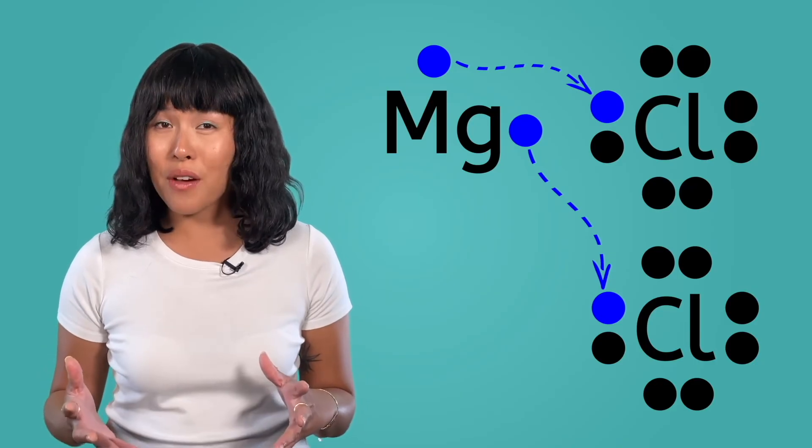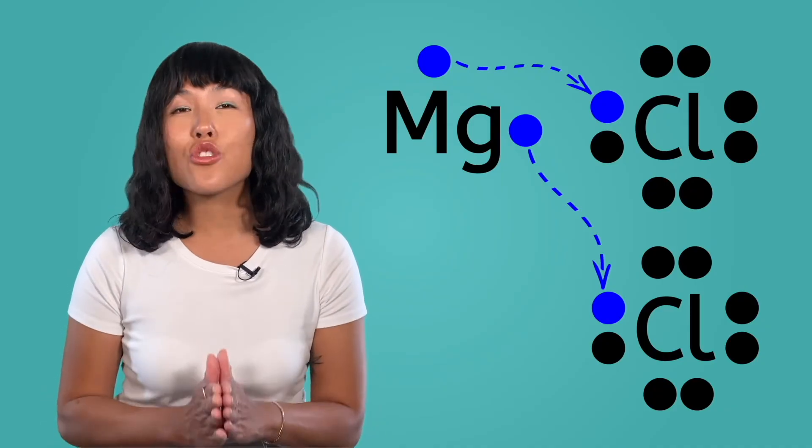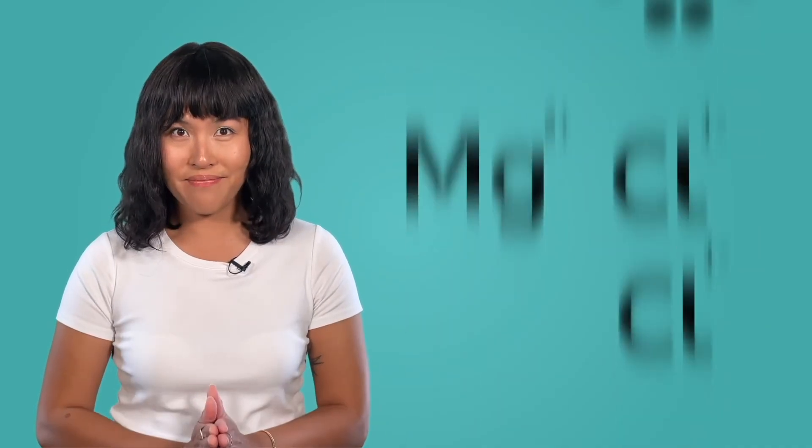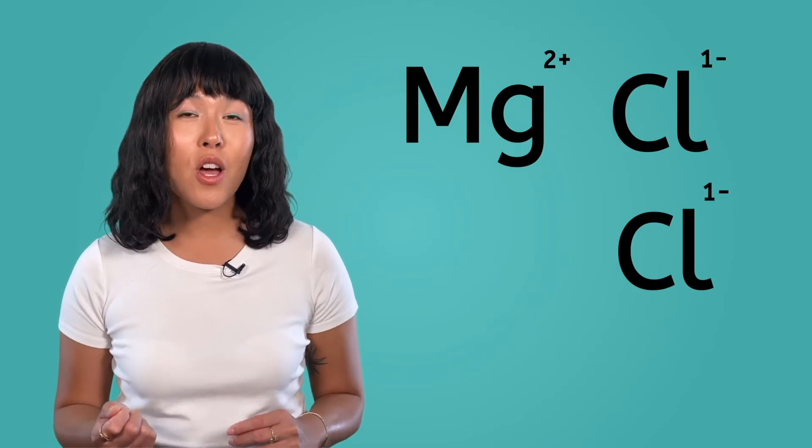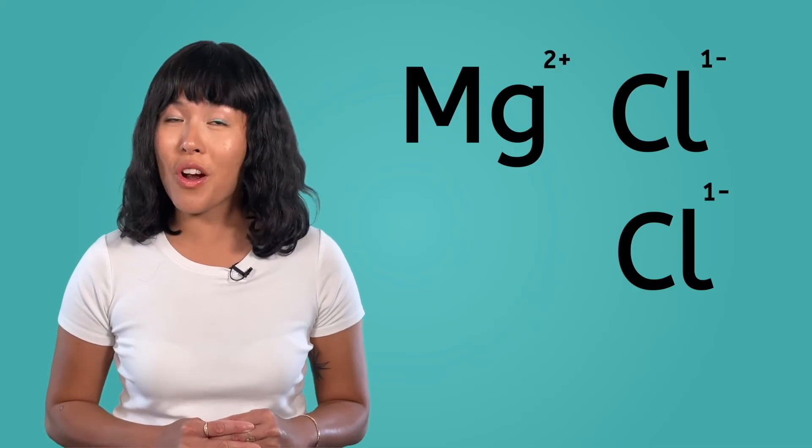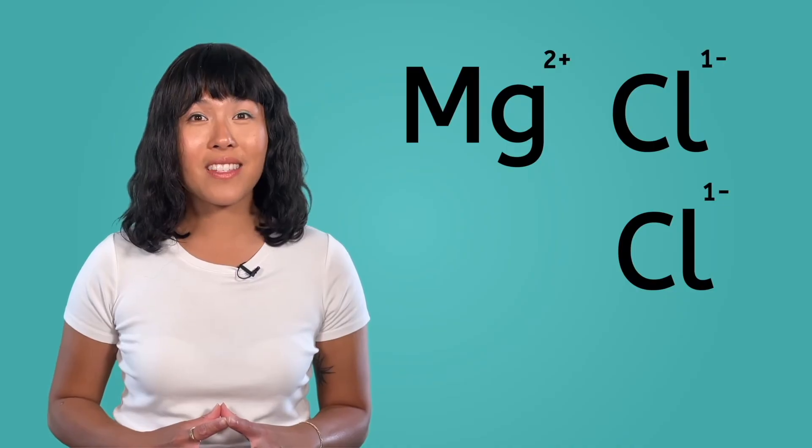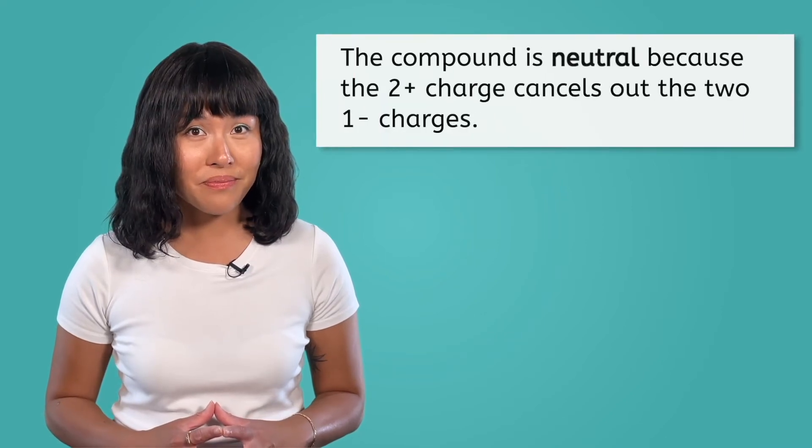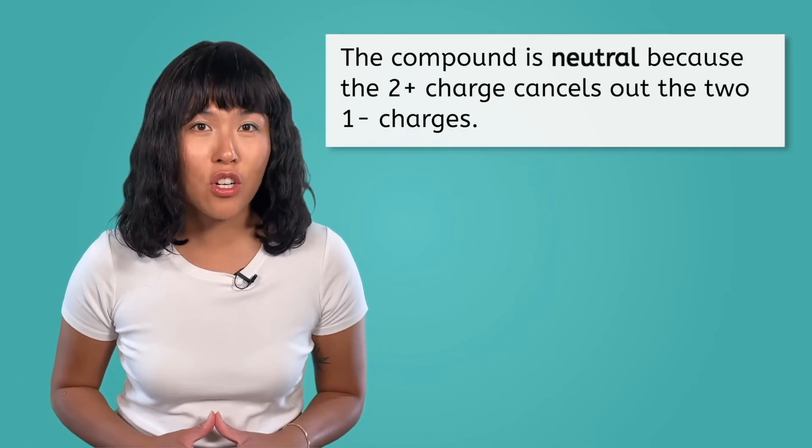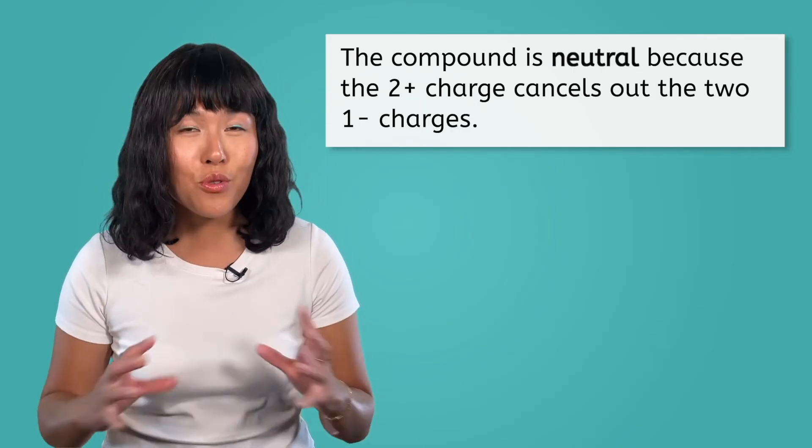Then we can give the second valence electron from magnesium to this new chlorine atom. Do all 3 atoms have full valence shells? Yes! Okay, so let's draw this ionic compound and write its formula. The final drawing for this ionic compound would show one magnesium ion with a positive 2 charge, because it lost 2 electrons and 2 chlorine ions, each with a negative 1 charge. As a whole, is the compound neutral? Yes, it is! The positive 2 charge cancels out the 2 separate negative 1 charges to form a neutral compound.